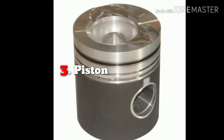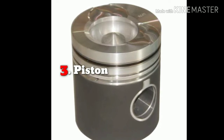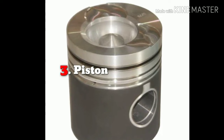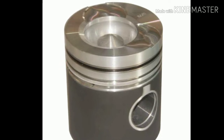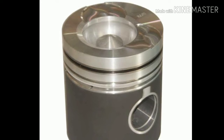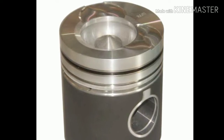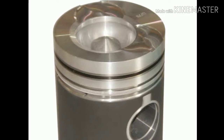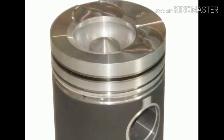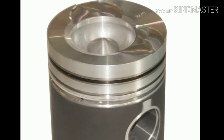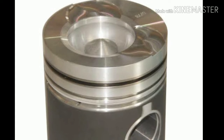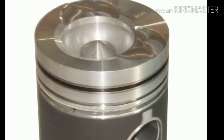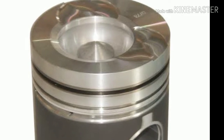The third part is the piston. A piston is a component of reciprocating engines, reciprocating pumps, gas compressors, and pneumatic cylinders. It is a moving component contained by a cylinder and made gas-tight by piston rings. In an engine, its purpose is to transfer force from expanding gases in the cylinder to the crankshaft via a piston rod and/or connecting rod. In a pump, the function is reversed — force is transmitted from the crankshaft to the piston for compressing or ejecting fluid. In some engines, the piston also acts as a valve by covering and uncovering ports in the cylinder.